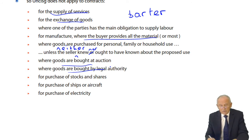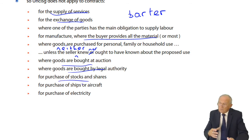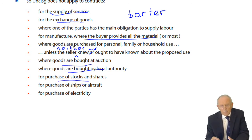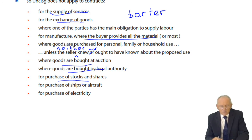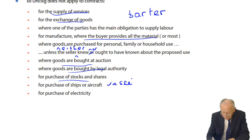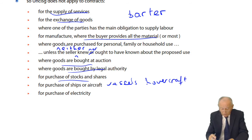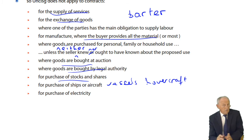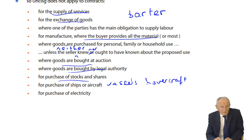The United Nations Convention for the International Sale of Goods also does not apply to the purchase of stocks and shares, since they represent an interest in a company rather than goods. Nor does it apply to the purchase of ships, aircraft, vessels, hovercraft, or submarines — interestingly, for reasons that are not entirely clear.